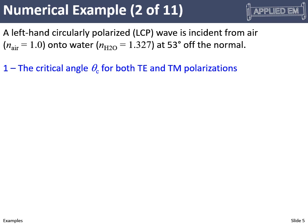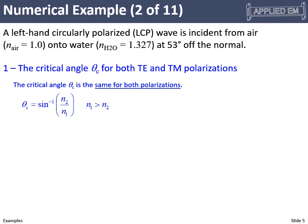Part one: calculate the critical angle for both TE and TM polarizations. It's the same for both, so we only have to calculate one. We refer to the equation for the critical angle, which is the inverse sine of N₂ divided by N₁, but this is only valid when N₁ is greater than N₂.